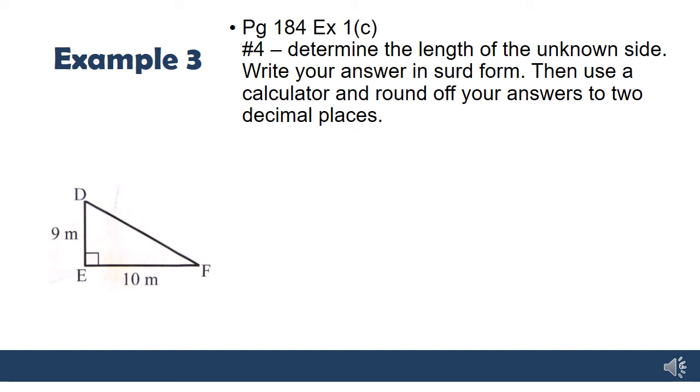Another example. Now, this one gives us some extra information. So, we're determining our third side. They say, write your answer in surd form. So, we're going to talk about what surd form means. Some of you may already know. Then, use a calculator and round off to two decimal places. And we know how to do that.